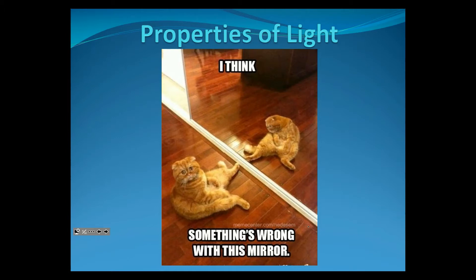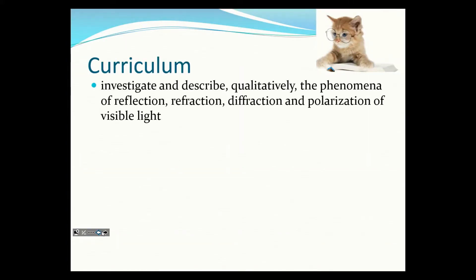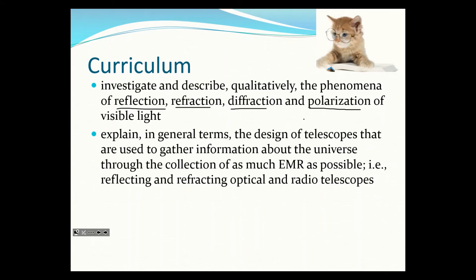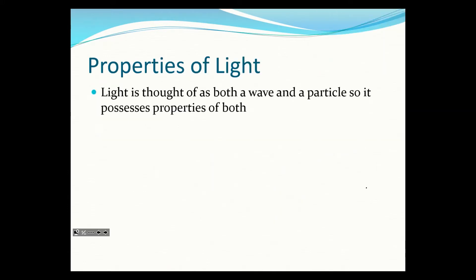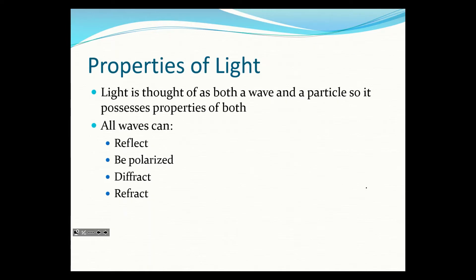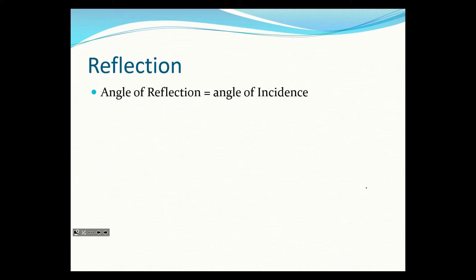Now we're going to talk about some properties of light. The curriculum points are to investigate and describe qualitatively the phenomena of reflection, refraction, diffraction, and polarization of light. We also need to talk about reflecting, refracting, and radio telescopes. Light is thought to be both a wave and a particle, so it possesses properties of both.